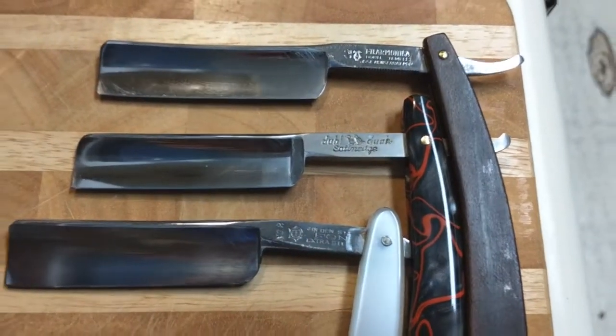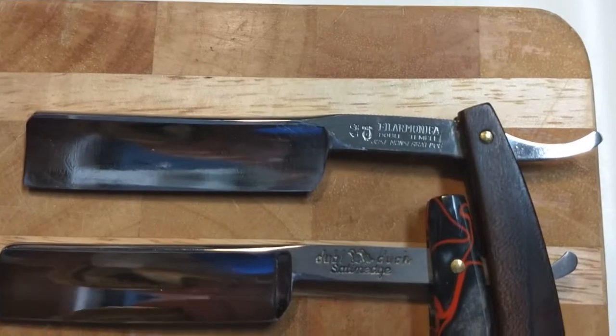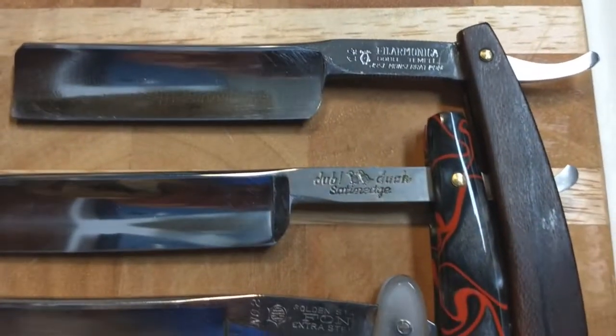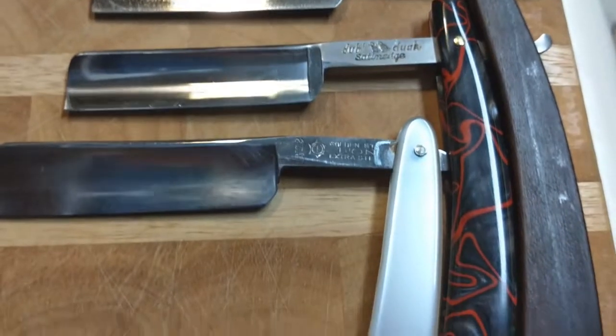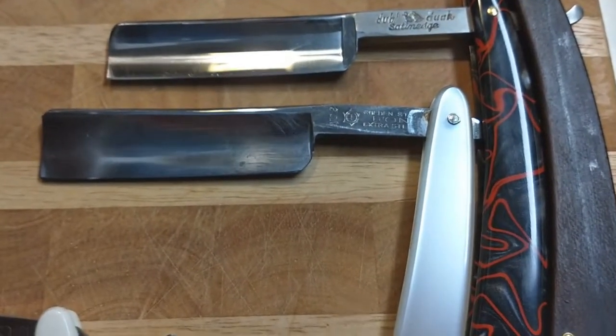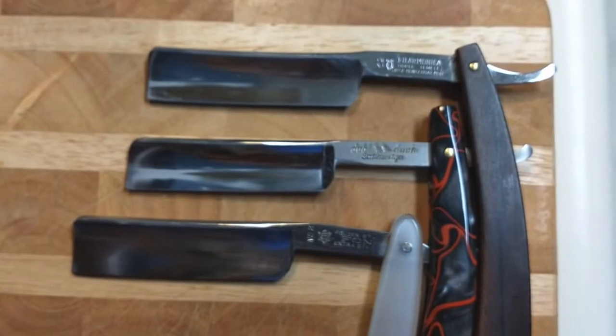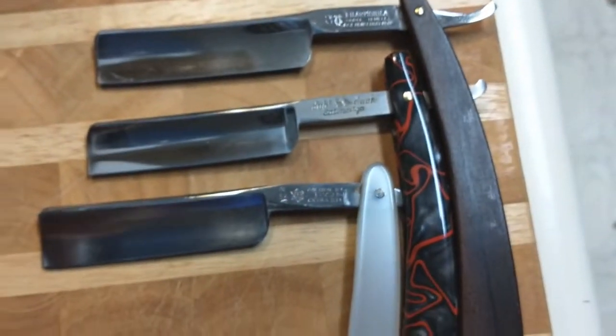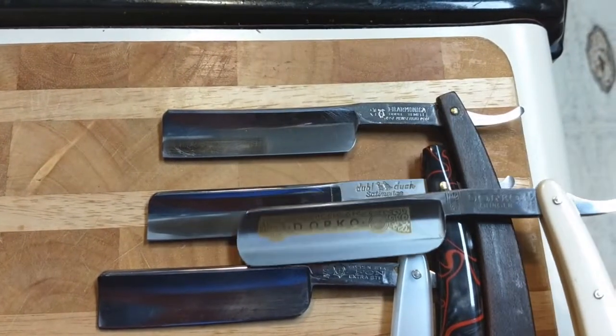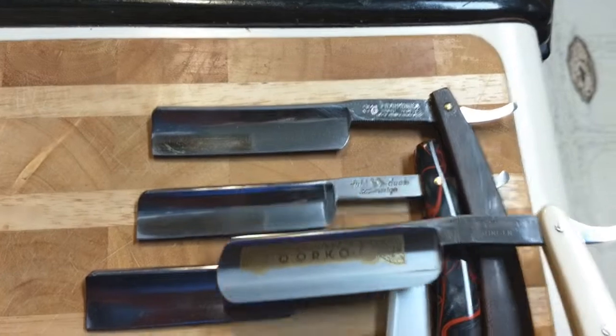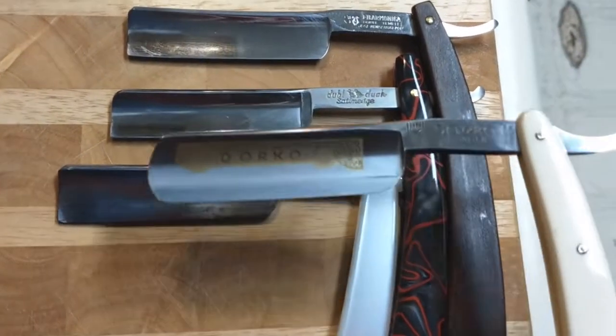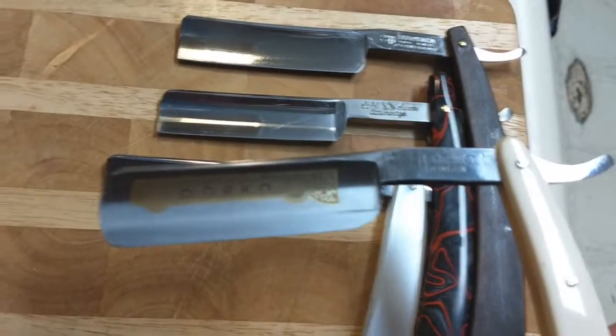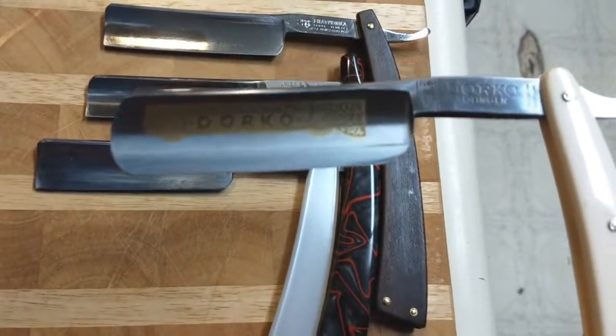Alright, so these are my most boss razors. The top one is the Filarmonica, the second one is the Double Duck, the next one is the Fawn Razor, and they're all really nice wide blades. Now as a comparison, this is the Dorco. Look at how giant this thing looks. I'm creaming my jeans. I want to hone this thing and shave with it too.